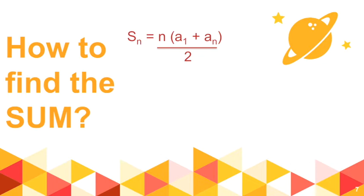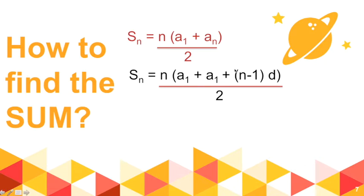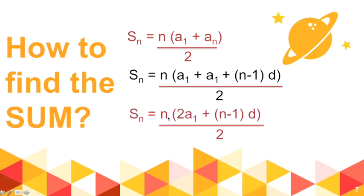From the first lesson on arithmetic sequence, there is a formula for a sub n: a sub n equals a₁ plus (n minus 1) times d. So this formula can also be written as S sub n equals n times (2a₁ plus (n minus 1)d) divided by 2. We now have two formulas for finding the sum of terms in an arithmetic sequence: the first when the first term, last term, and number of terms are given; and the second when the number of terms, first term, and common difference are given.